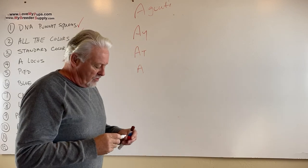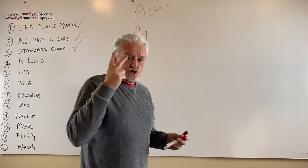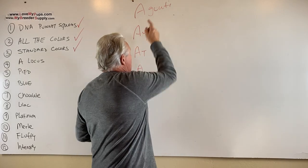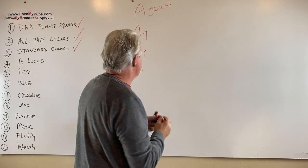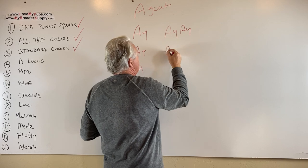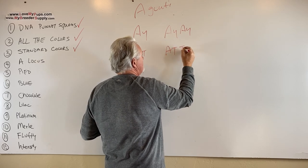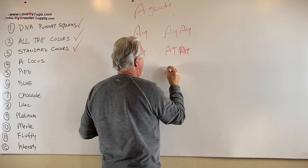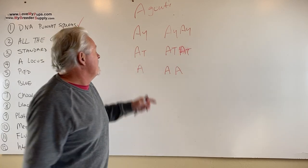So any dog, remember all dogs get two copies, one from dad, one from mum, that make up the A locus. So what are the possibilities? Well a dog can be AYAY, ATAT, or AA, right? Or any other combination.